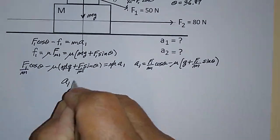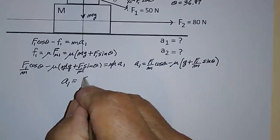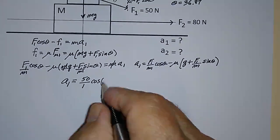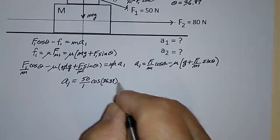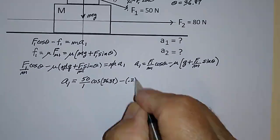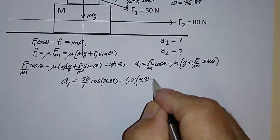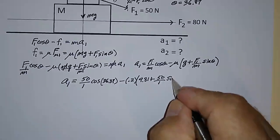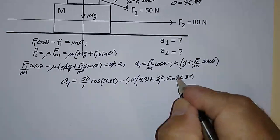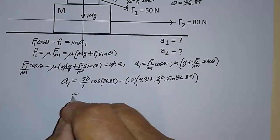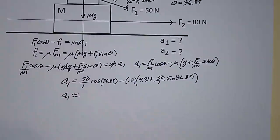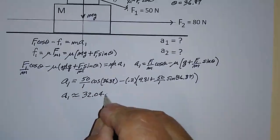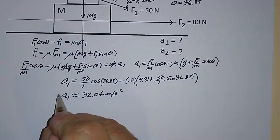a1 = (50/1) × cosine(36.87°) minus 0.2 × 9.81 minus (50/1) × sine(36.87°) × 0.2. Working this out gives a1 = 32.04 meters per second squared.